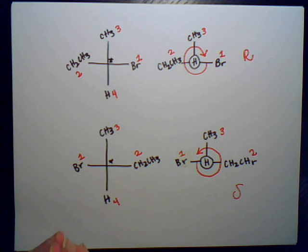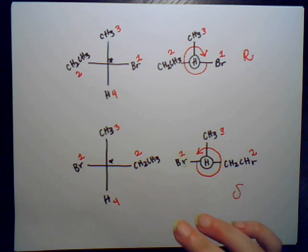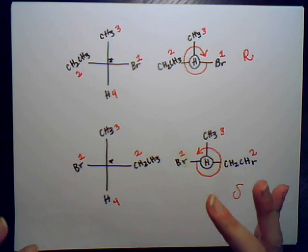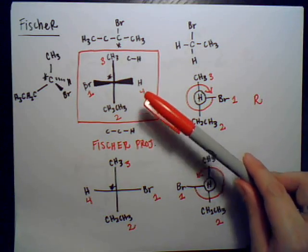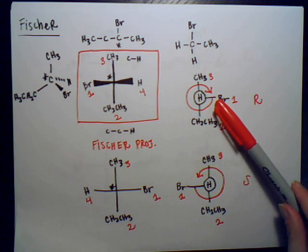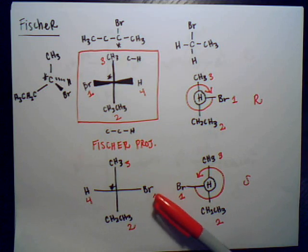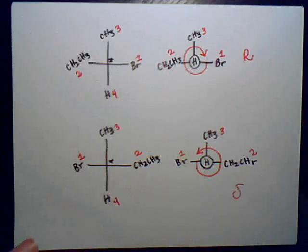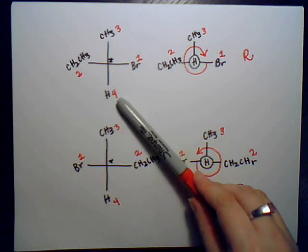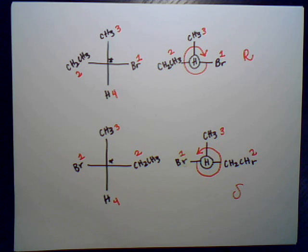The major thing to remember when using a Fischer projection to determine R and S configuration: if the lowest priority is on the horizontal, you do a flip. If the lowest priority is already on the vertical, there is no flipping involved. That's how you find R and S configuration from Fischer projections.